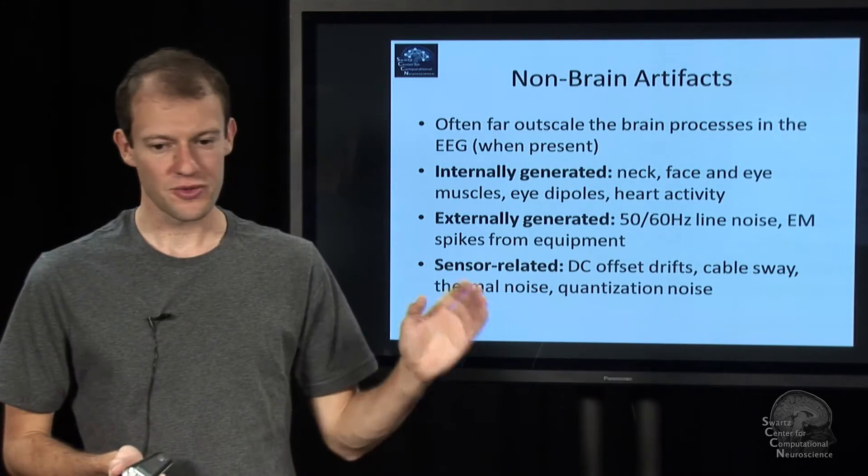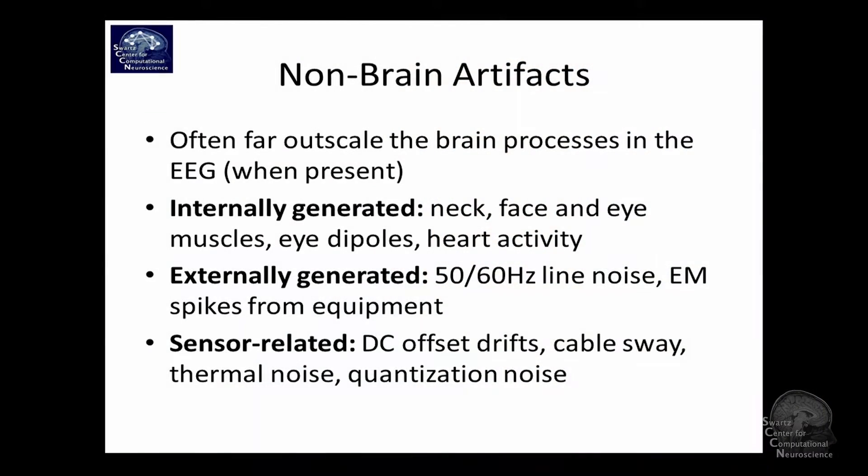There's also sensor artifacts: shifts in signal amplitude — called DC shifts or drifts — and cable sway artifacts, where if your cables are swaying around you get lots of low frequency shifts. There's thermal noise at the interface between the electrode material and the skin, which basically gives you the noise floor. It depends on the surface area of the electrode, the material properties, and things like that.